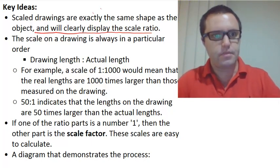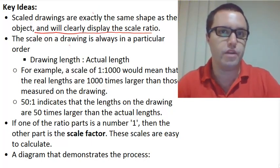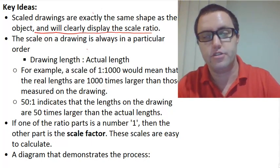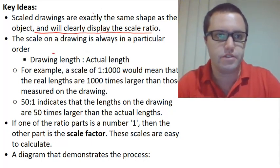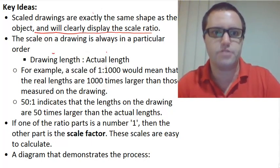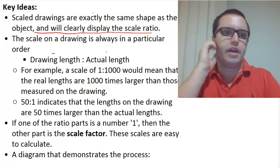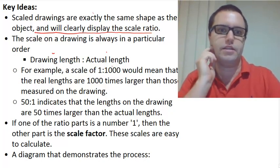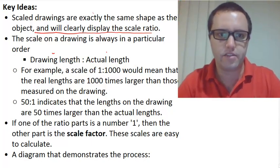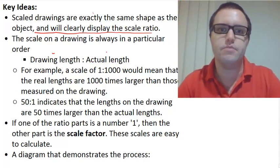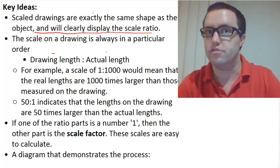The scale of the drawing is always in a particular order because with ratios, order is very important. You always have the drawing length to the actual length. For example, a scale of 1 is to 1000 would mean that the real lengths are 1000 times larger than those measured on the drawing.